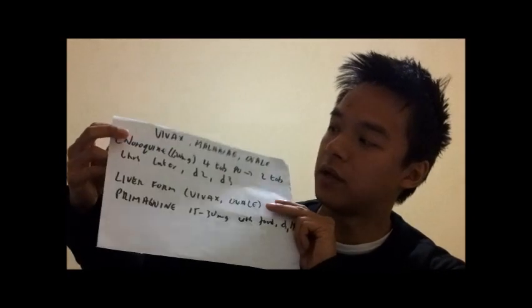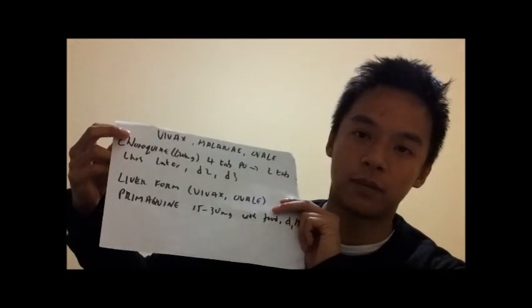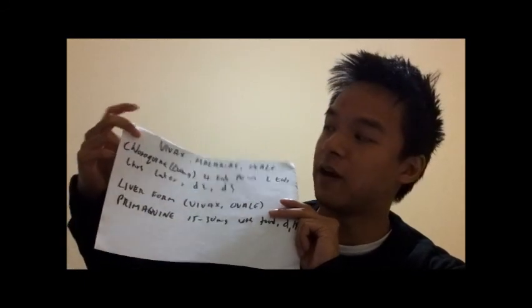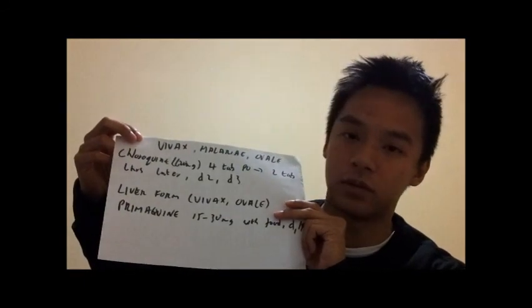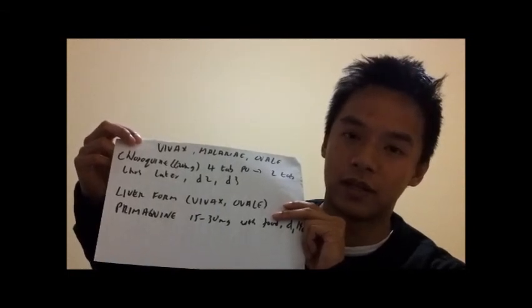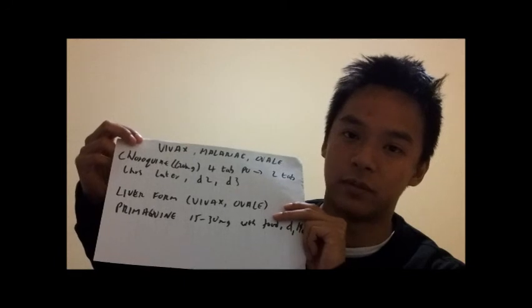Now let's discuss the treatments for the different plasmodium species that can cause malaria. When treating malaria caused by P. vivax, P. malariae and P. ovale, we can use chloroquine. We no longer use chloroquine for P. falciparum because it has largely developed resistance to it, and P. vivax is also starting to show resistance to it. So the treatment you use to treat malaria is very important as we want to minimize resistance.